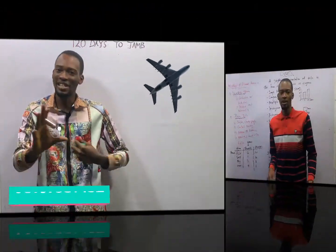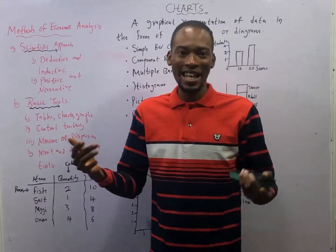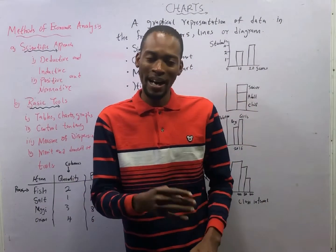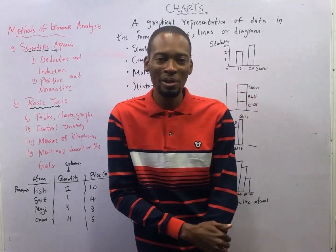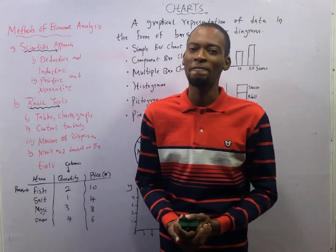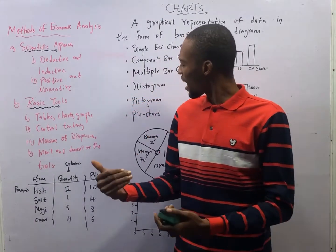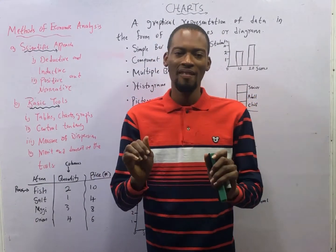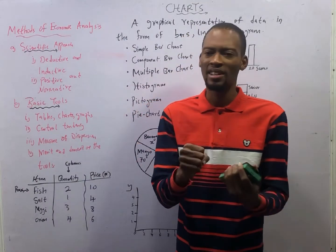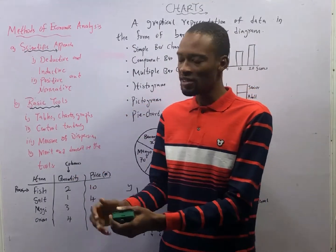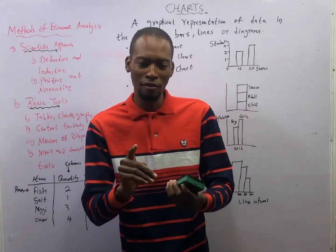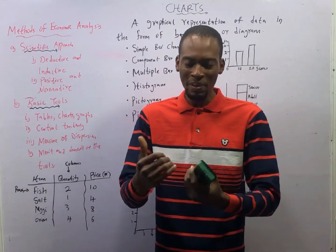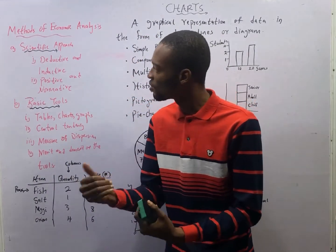Ladies and gentlemen, it is time to take off. This is episode number 8 of the 120 Days to Jump Economics with Flash Isaac. I promised to make the calculation, graph, and table parts of economics very simple for you — and that begins from this episode.